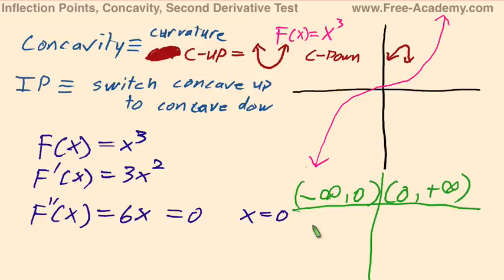And now we pick our test points and then put them into our second derivative. So negative one and positive one lives in those intervals. They're very easy to do. Six times negative one equals negative six. And then six times one equals positive six.